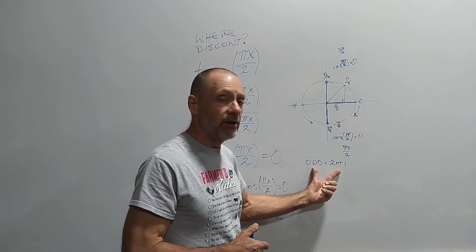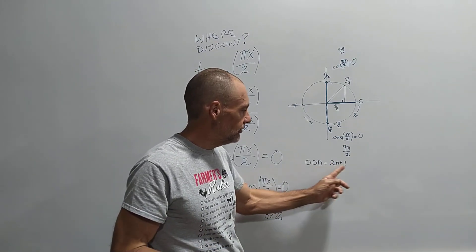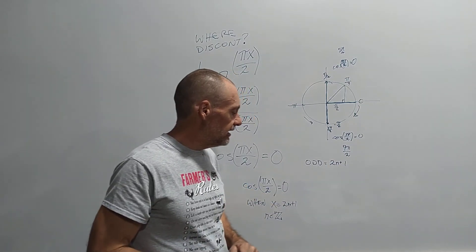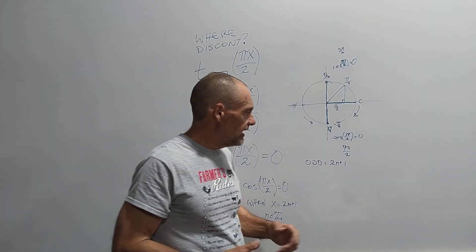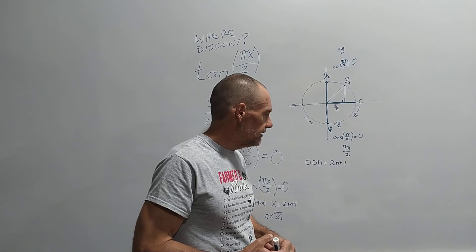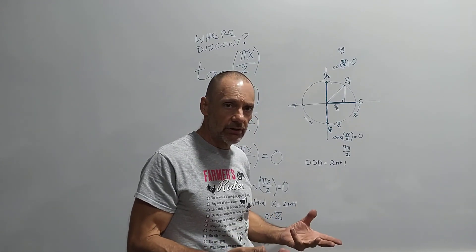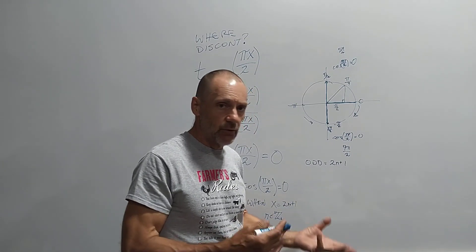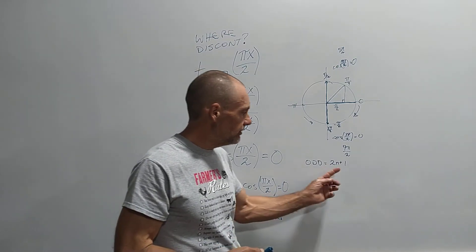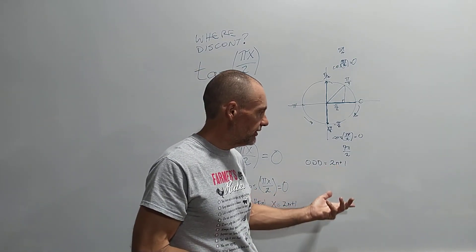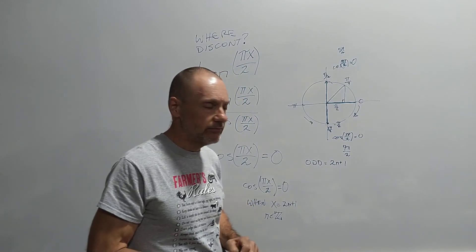So there's a little formula for the odd numbers, it's handy to know this, 2n plus 1, where n is an integer. So n can be any counting number, a whole number, right? Positive or negative, or 0. So if we plug in 0, 2 times 0 is 0 plus 1 is 1, so we get the first odd number, right?